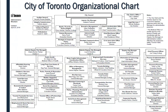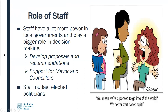The other important element in governing a municipality is, of course, the staff. Here is the City of Toronto's organizational chart. At the very top you have City Council, then the City Manager, and then everybody else. Staff have a lot more power in local governments, and the structure of the staff system is more coordinated. In municipalities, power is more diffused — no one clearly has control of any single policy area like health or environment. As a result, staff play a bigger role in decision making. Staff develop the proposals and recommendations that go to boards, councils, and committees.